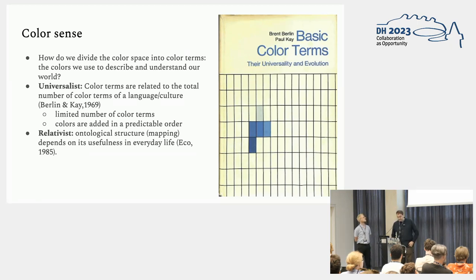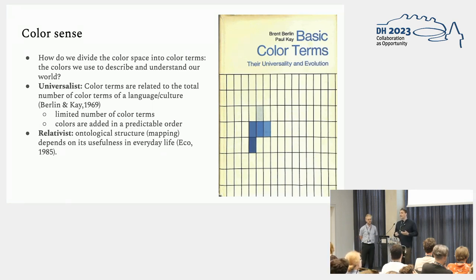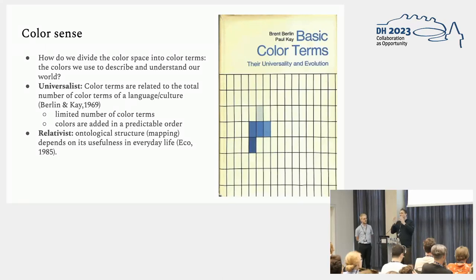Then we also have the relativist school, which is mainly represented by the Italian semiotician Umberto Eco, who posited that this ontological structure — the mapping of the color space into distinct color terms — depends very much on the usefulness of color terms in everyday life. You have famous examples about many words for snow or many words for cattle, for example.